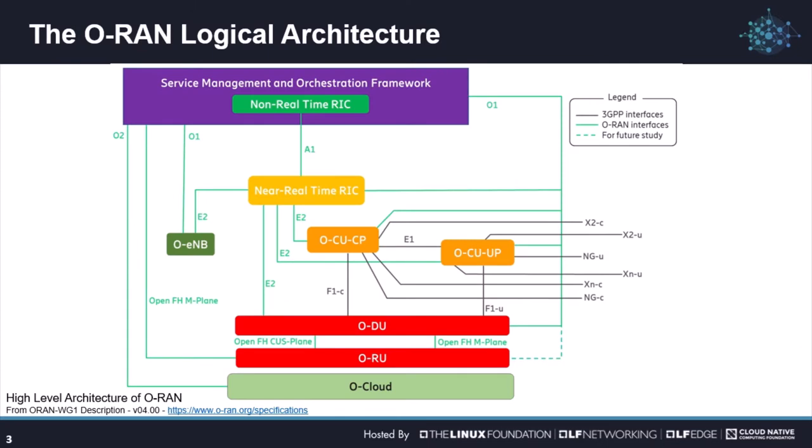So, this is an overview of the ORAN architecture. The ORAN architecture is quite similar to and is pretty well aligned with the 3GPP RAN architecture, but it also includes some new functions and interfaces, including two new RAN Intelligent Controller logical functions or RICs — one in the RAN and one in the OAM or service management and orchestration layer.